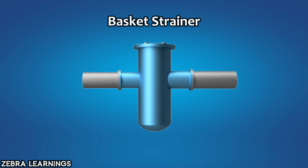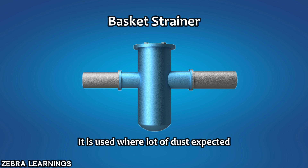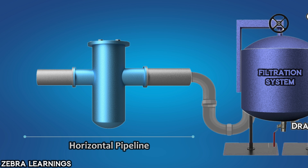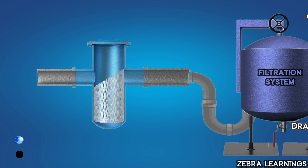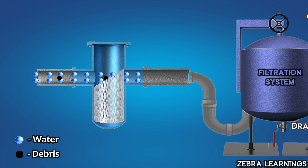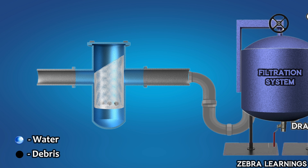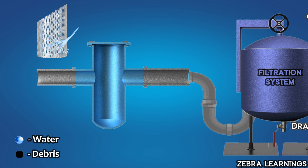Next, let's understand how a basket strainer works. Basket strainers are used in systems where a lot of dust is expected. For example, they are used in filtration system pipelines. A basket strainer can only be installed in a horizontal line. When water flows through the pipeline, it travels through the strainer. As it travels, all the debris in the water gets filtered and stored in the strainer. Then the filtered water goes to the pump. We can then remove the strainer and clean all the particles that are inside it.